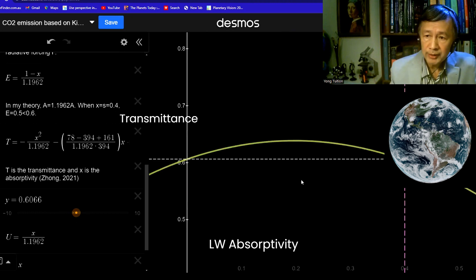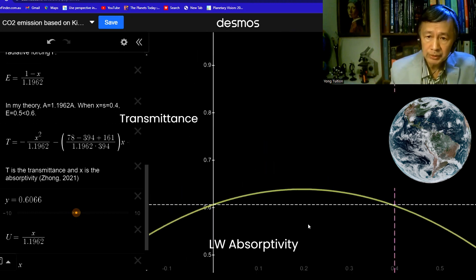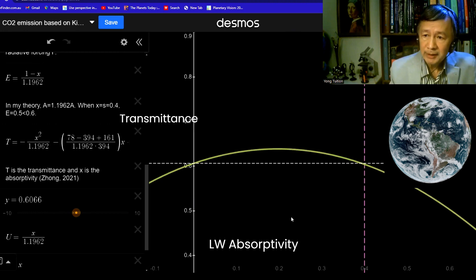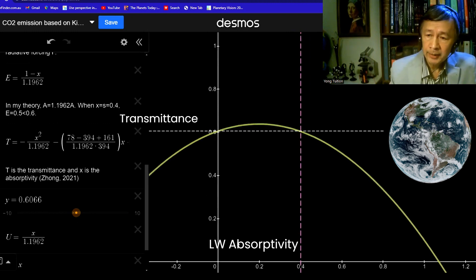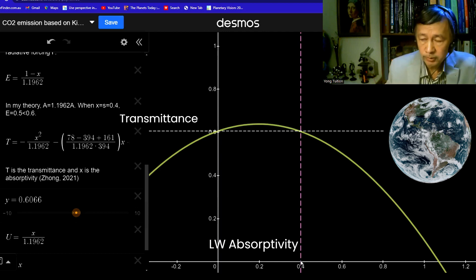The reason I draw this horizontal dashed line is just to remind you, the value for transmittance at two points are equal. These two points are zero, there is no absorption, or there's no greenhouse gases, and 0.4, the absorptivity is 0.4. In other words, 45% of the longwave surface radiation is absorbed by the greenhouse gases in the atmosphere.